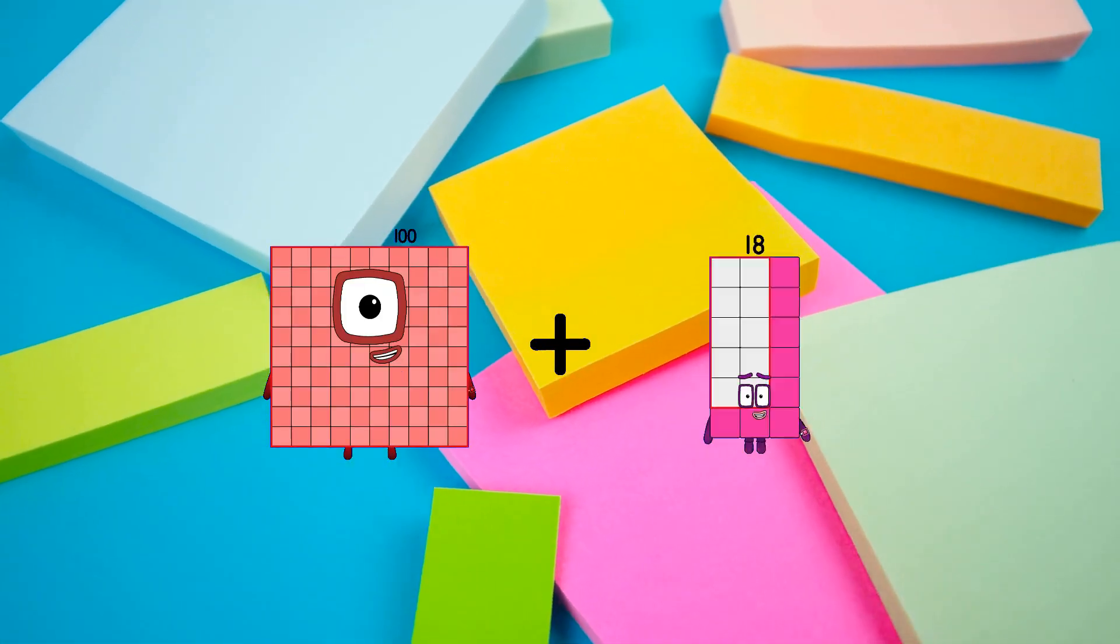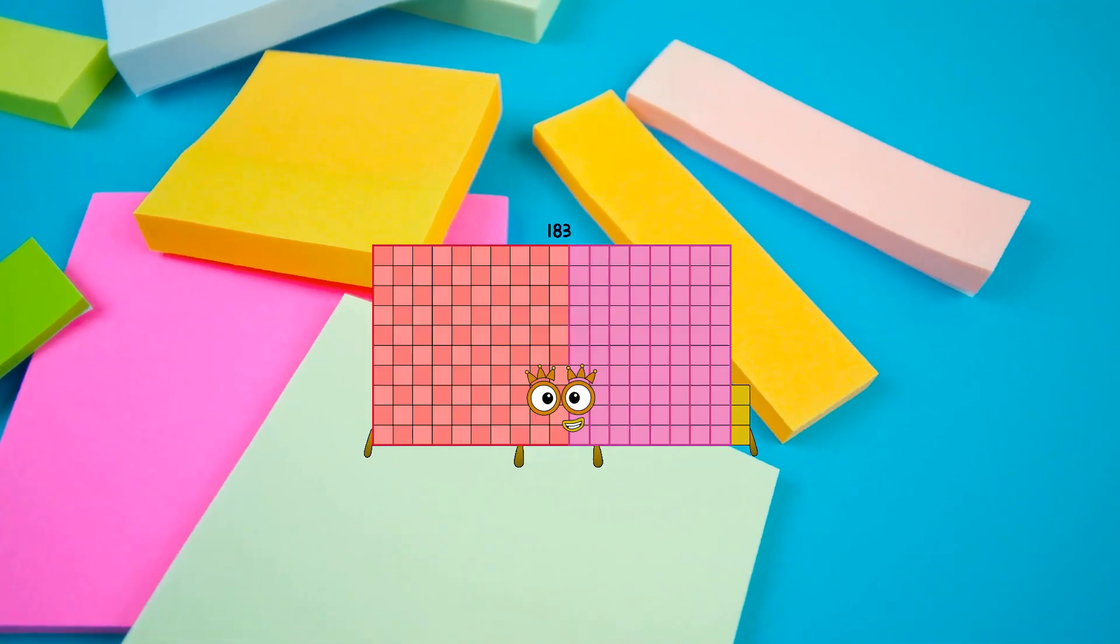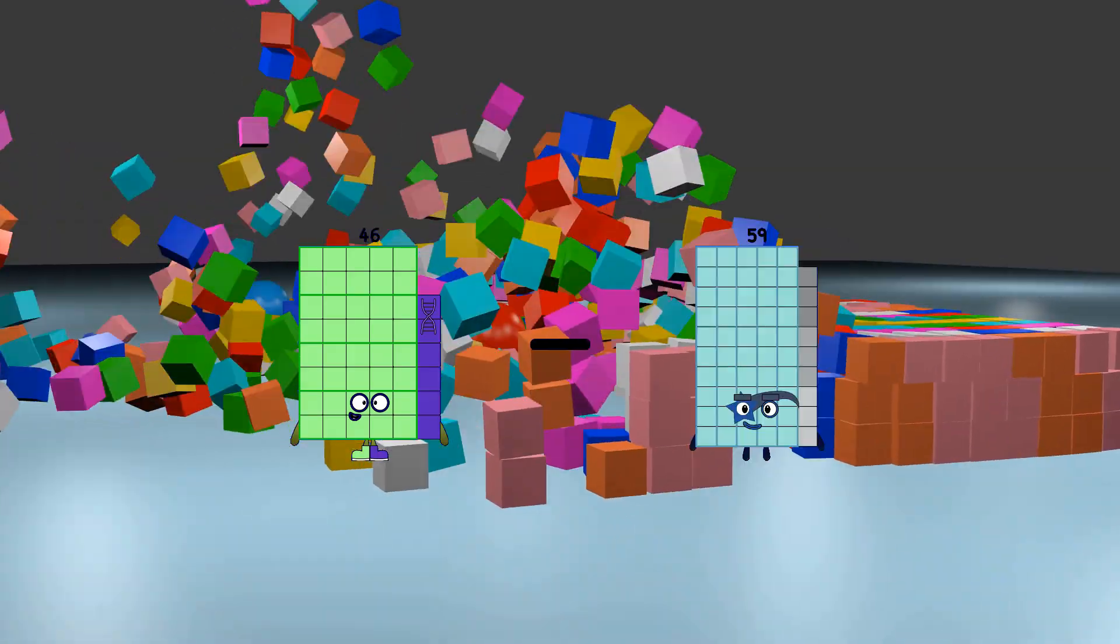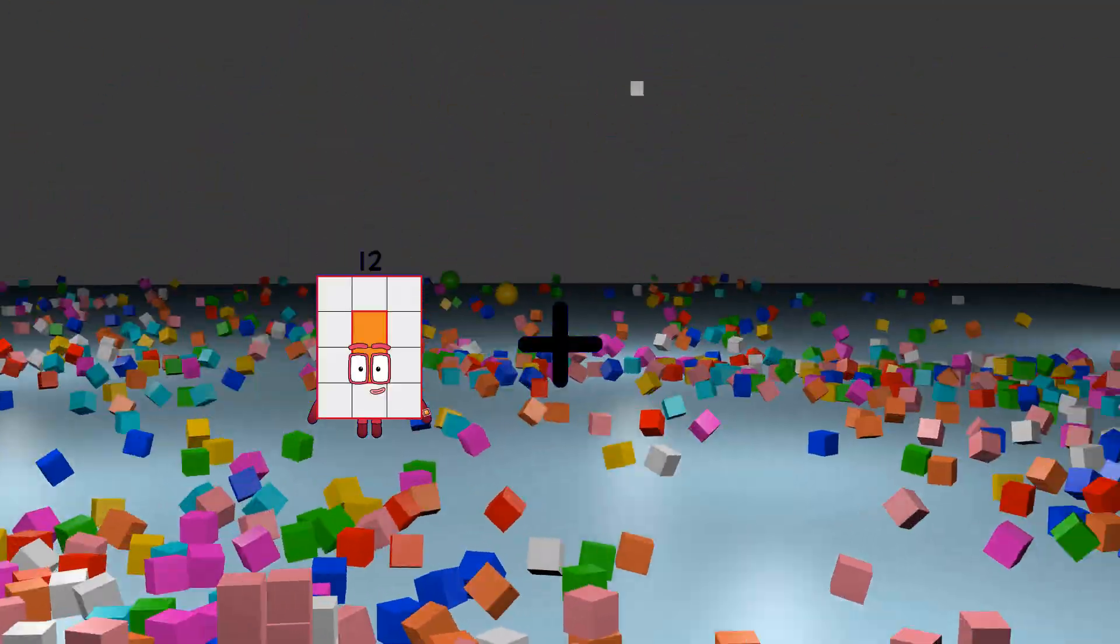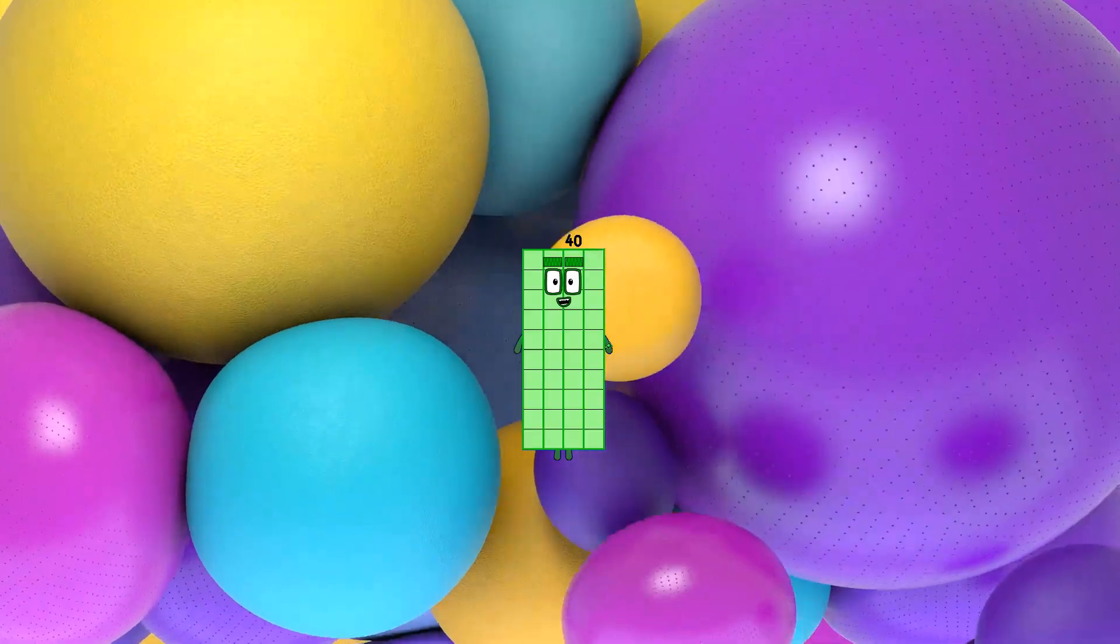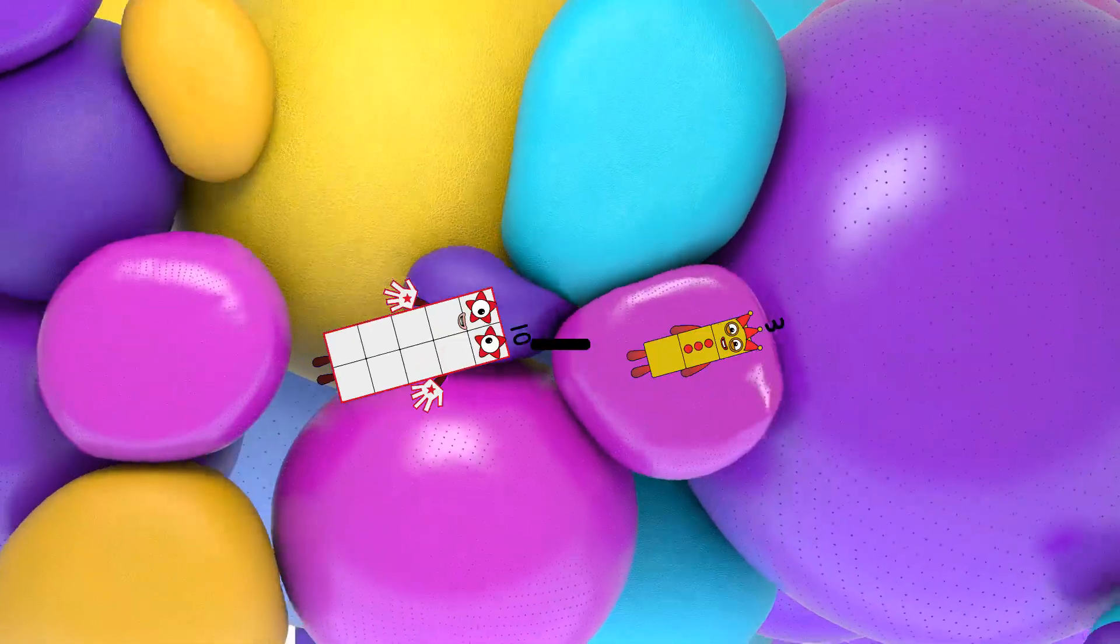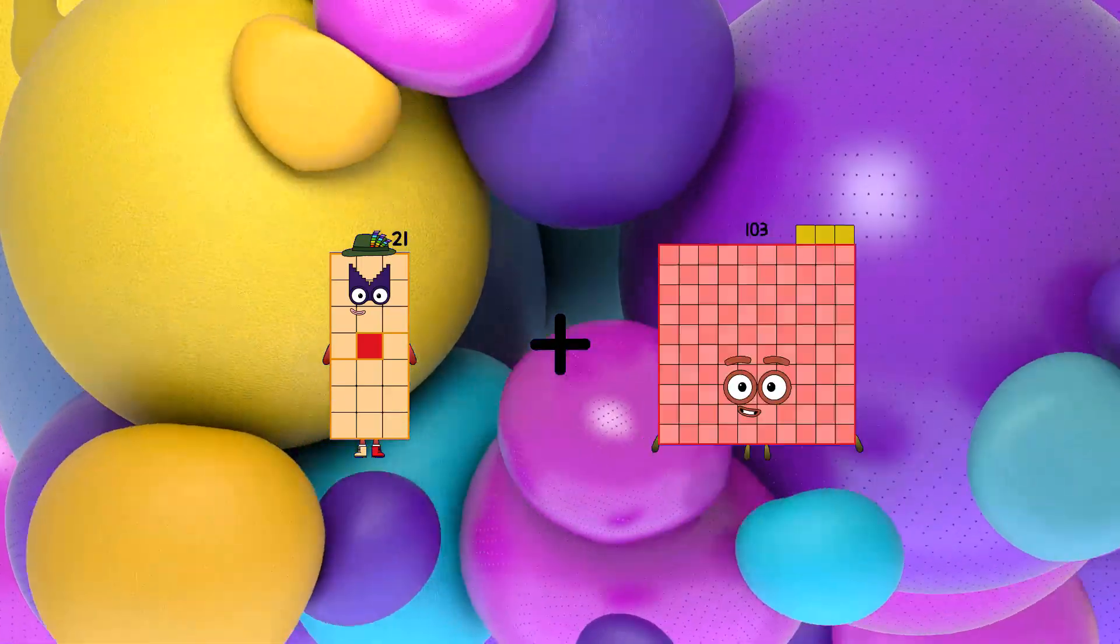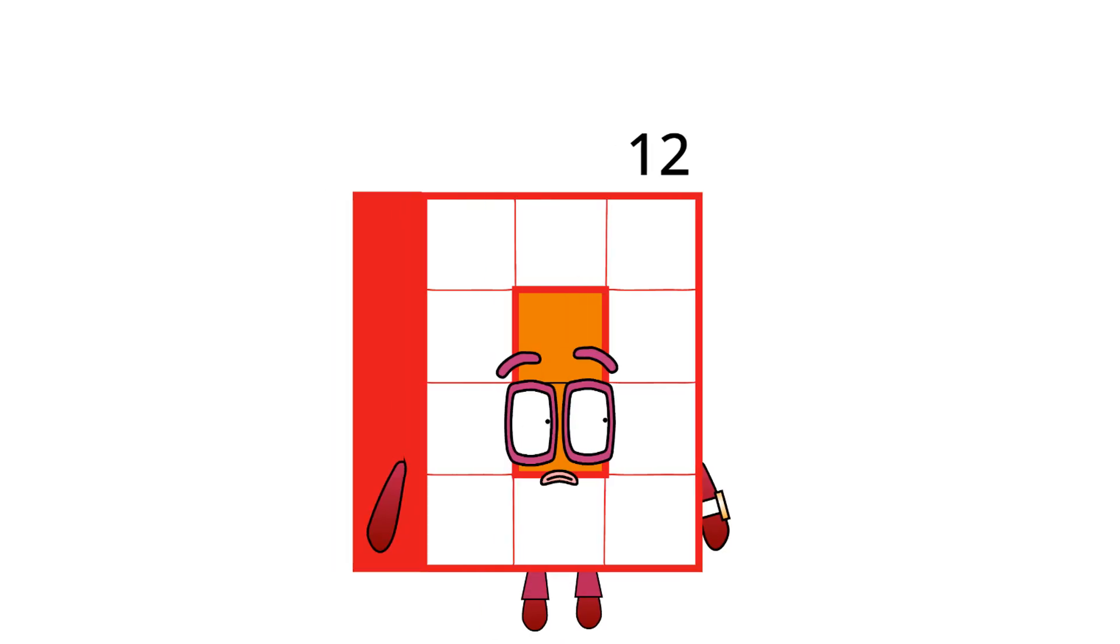100 plus 83 equals 183. 46 minus 22 equals 24. 12 plus 28 equals 40. 10 minus 3 equals 7. 21 plus 20 equals 41. Now what?